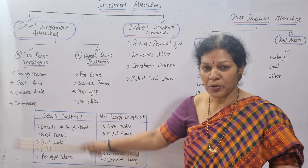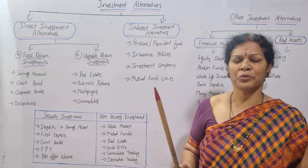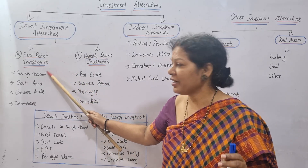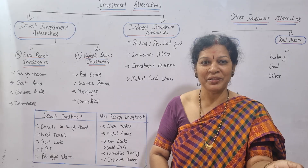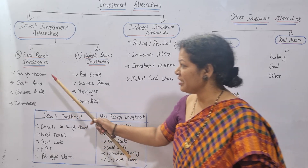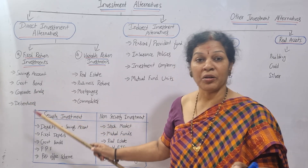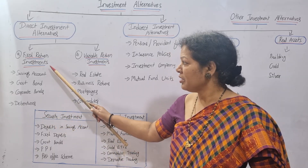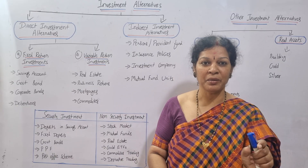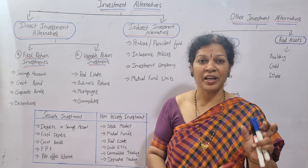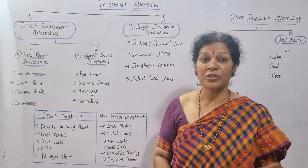Let's focus on fixed return investments. Examples include savings accounts — if you open one at any bank, you will get a fixed amount of return every month. Similarly, fixed deposits, government bonds, corporate bonds, private bonds, and debentures are fixed return investments. Debenture holders will be given interest as per their investment regardless of whether the company is in profit or loss. These are all fixed, irrespective of the company's performance.